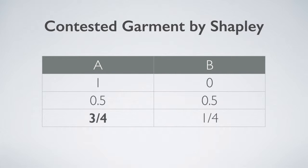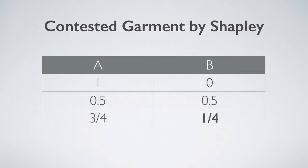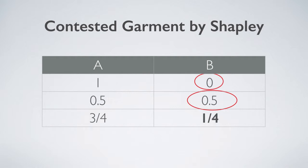Suppose A and B are the two persons. For person A, his claimed amount is 1, and the unclaimed amount by B is 0.5. Hence, A is awarded three-quarters. For person B, his claimed amount is 0.5, and the unclaimed amount by A is 0. Hence, B is awarded one-quarter.